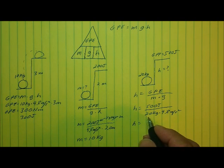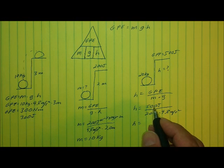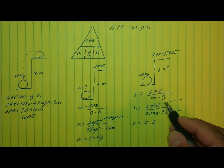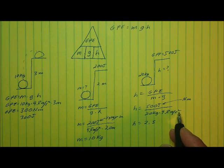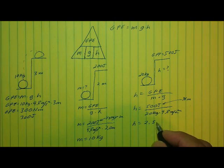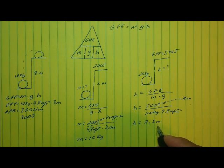Plugging in: h equals 500 joules divided by 20 kilograms times 9.8 meters per second squared. Rounding to 10, we get 20 times 10 equals 200, and 500 divided by 200 is 2.5. For units, the joule is a Newton·meter; kilograms times meters per second squared is a Newton, so the Newtons cancel, leaving meters. Therefore the height is 2.5 meters. Remember: you must include the unit in your answer, otherwise the answer is wrong.